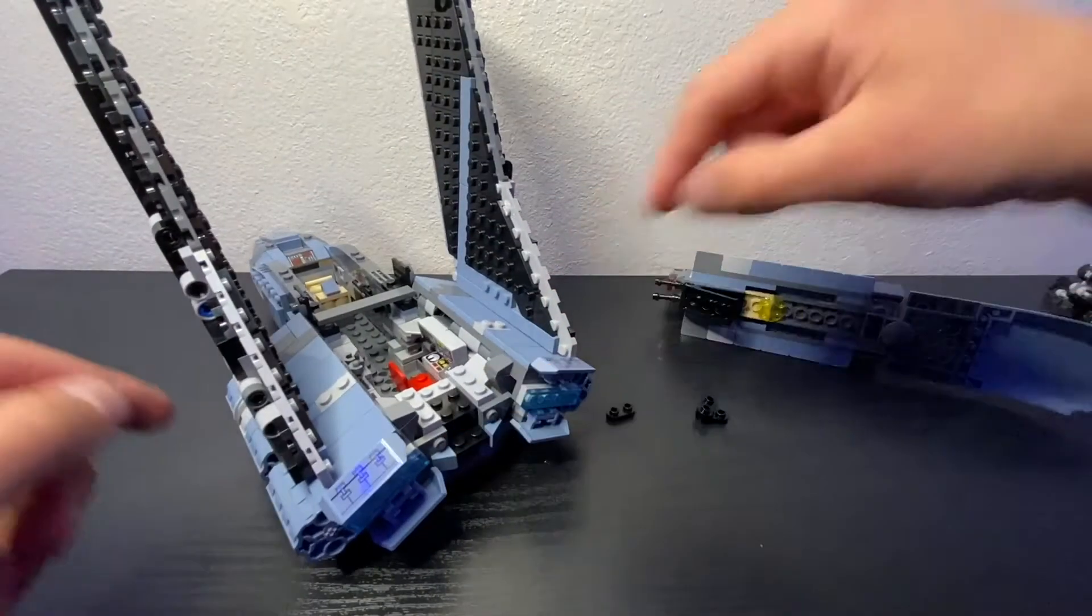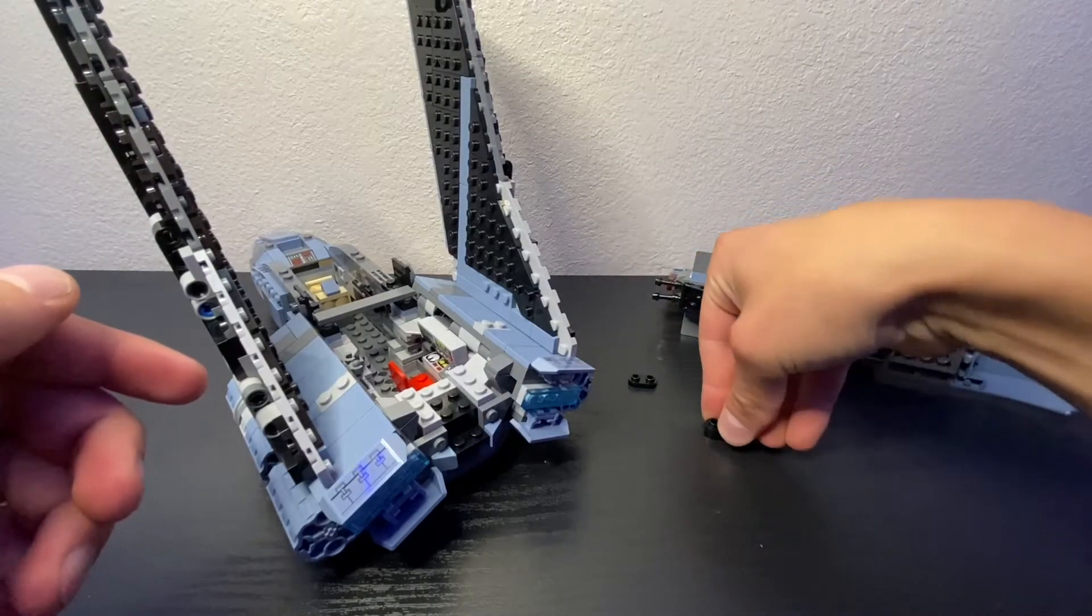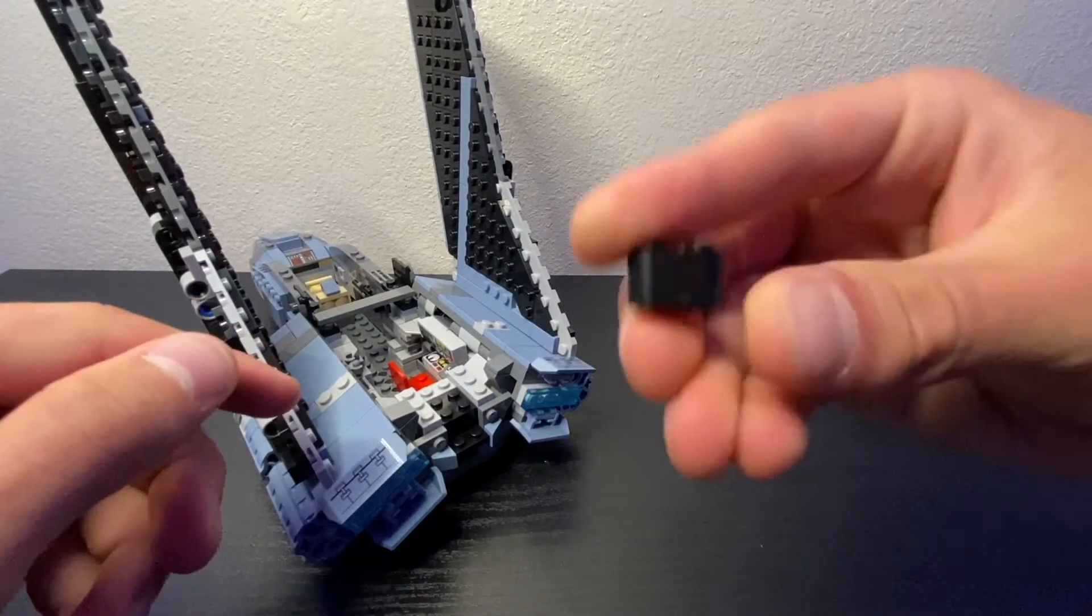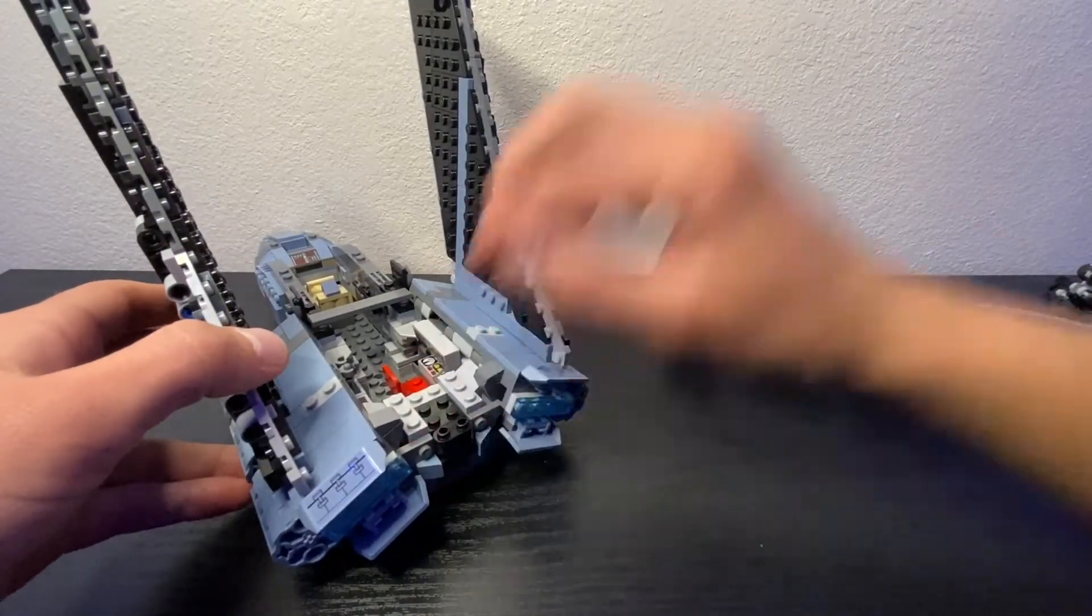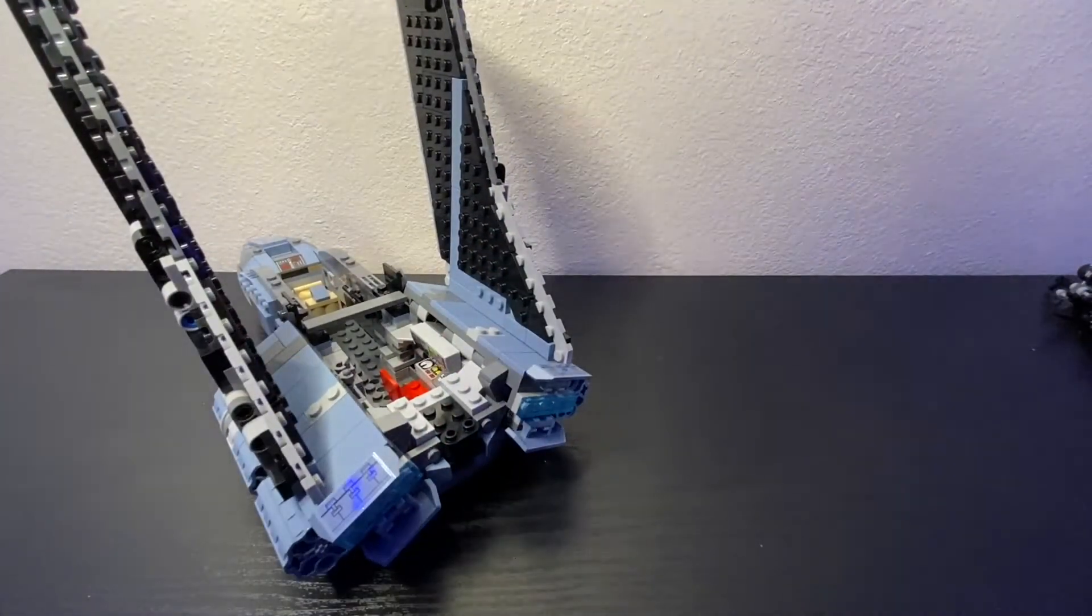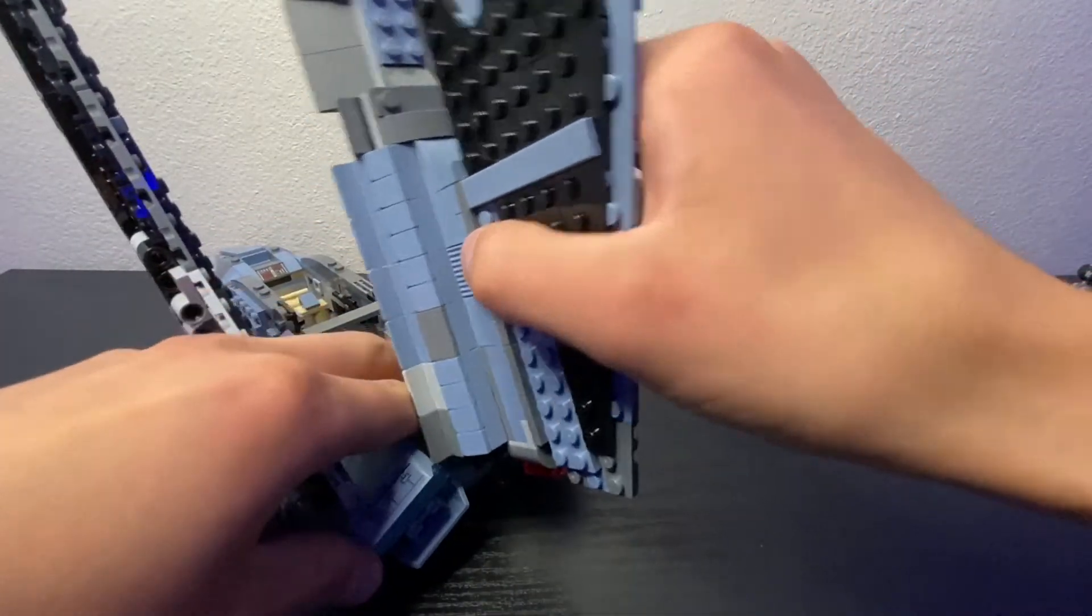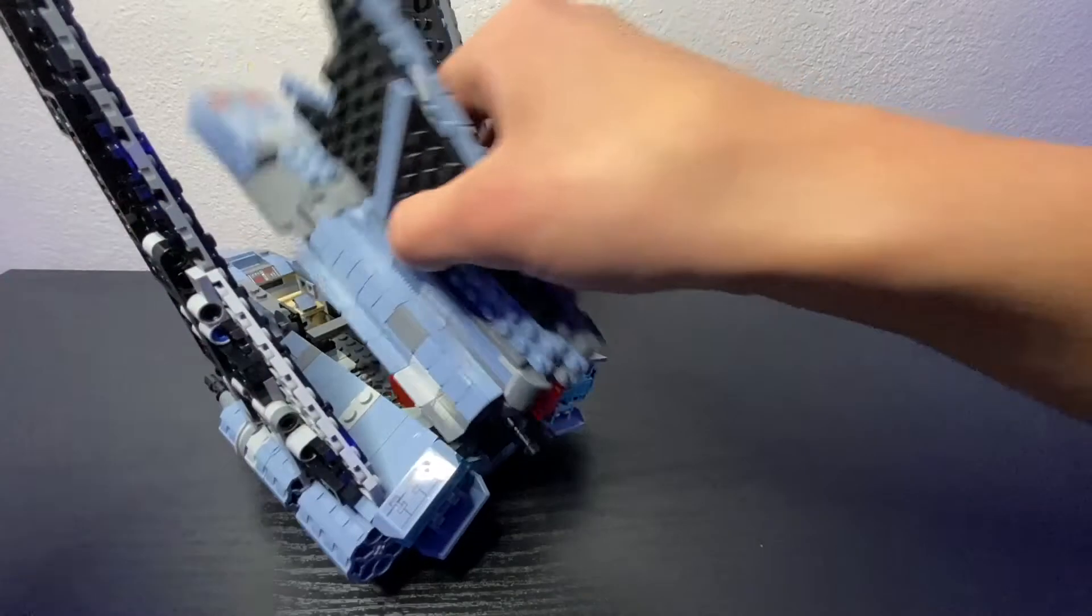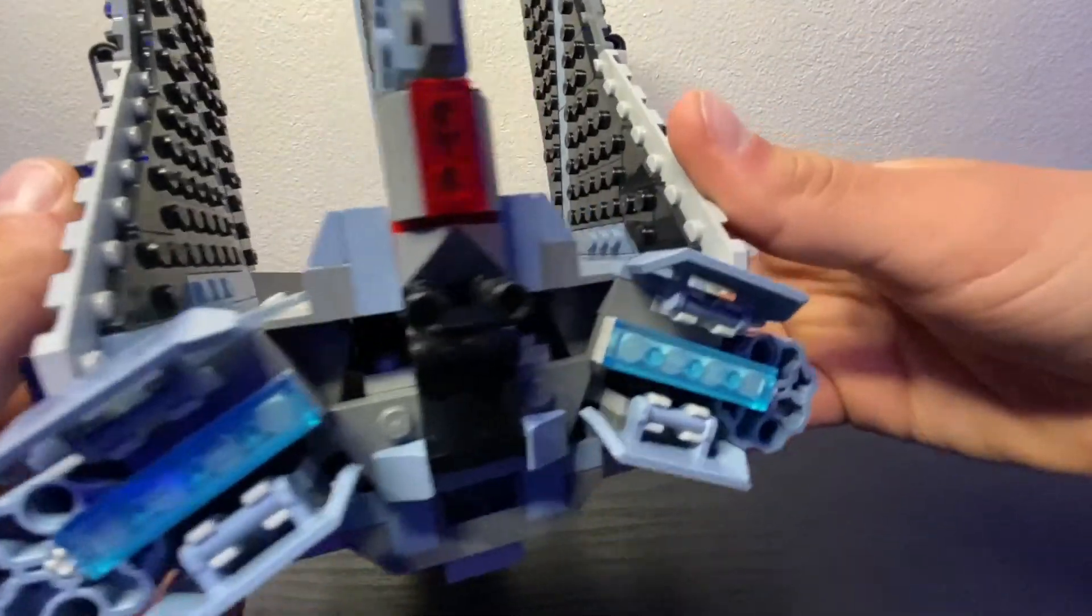But now we have this little gap right here. So I went ahead and just reused these pieces and just stacked them on top of each other. Just like that. And put them right there to fill the original gap. And honestly, I think it looks a whole lot better. It adds a little bit more detail to the back of the ship. Give it a little bit more of that rounded look. And then with the guns on the top there, it looks a whole lot better.